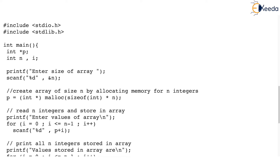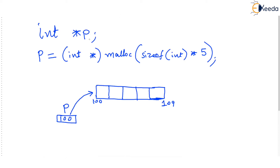But before we see this program at full length, let us work on an empty slate and try to understand what we are talking about first. Let's say in my program I declare one pointer: int pointer p. Now you know that the pointer p will be stored in the memory, and this pointer p is capable of storing the address of an integer. Just don't bring arrays into the picture — p is a pointer and it can point to any integer.